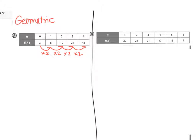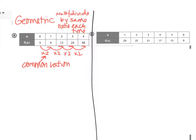A geometric sequence, you are either going to multiply or divide by the same ratio every time, each time. So this value right here is called the common ratio. Let's look at how the other one might be different.